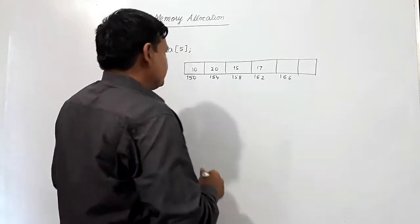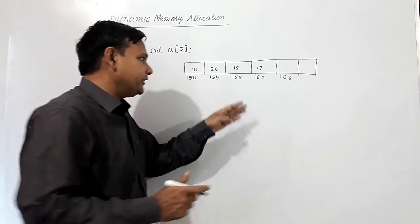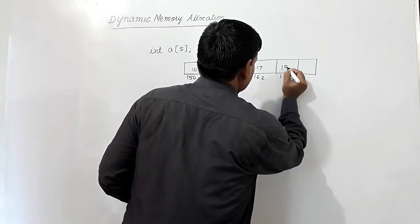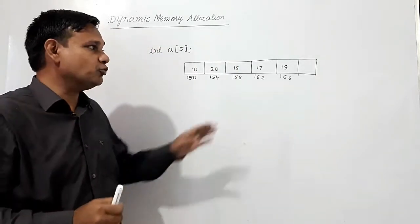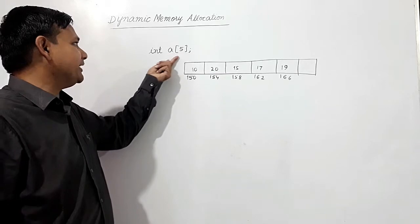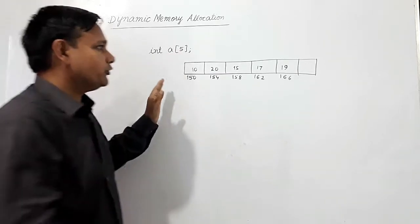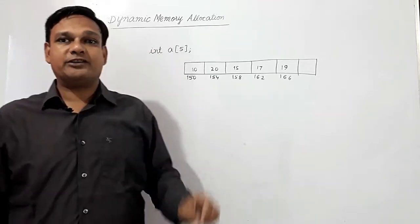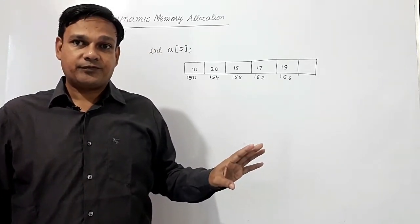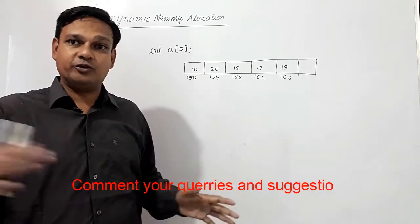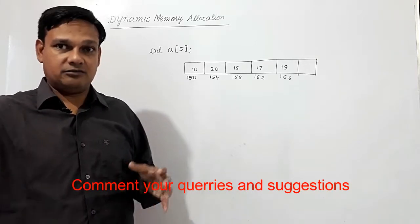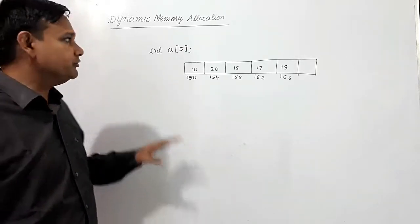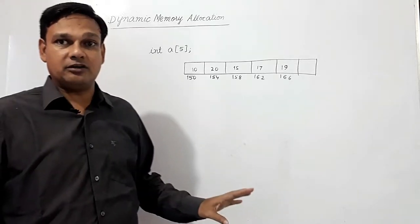If I fill all five values, for example the fifth value is 19, I cannot store more than five integers because memory has been allocated statically. It cannot be changed — neither reduced nor extended. To overcome such problems, we shall use the concept of dynamic memory allocation.